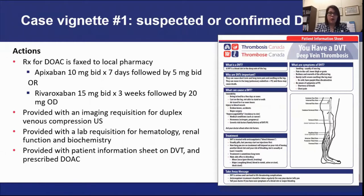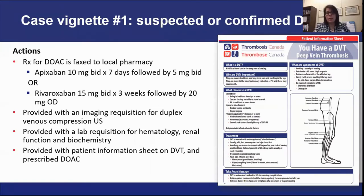While faxing the prescription to the patient's pharmacy, we also need to organize imaging and lab investigations. Complete a requisition so the patient can go to the nearest diagnostic imaging facility, ideally within the next 24 hours. We also want routine blood work including a CBC to evaluate baseline hemoglobin and platelet count, and a creatinine to assess renal function and ensure it's safe to continue the direct oral anticoagulants. Provide the patient with the Thrombosis Canada information sheet on DVT so they know what symptoms to monitor for.